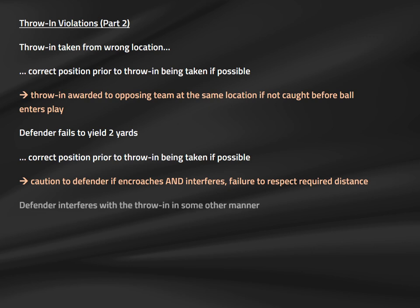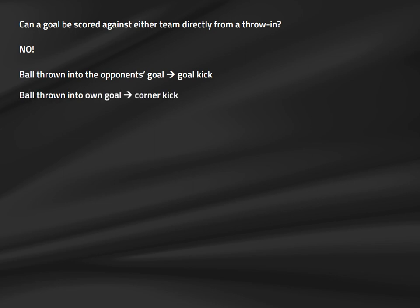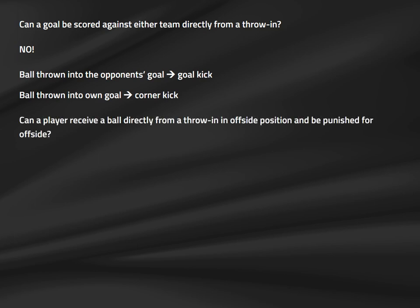A defender may also attempt to distract or confuse the thrower from outside the two-yard radius — this would be cautionable for unsporting behavior rather than failure to respect required distance. You cannot score a goal directly from a throw-in, either against the opposing team or against your own team. If the ball enters the opposing goal without touching another player, the correct restart is a goal kick; if it enters the player's own team's goal, the correct restart is a corner kick. A throw-in is one of three exceptions to the offside rule.